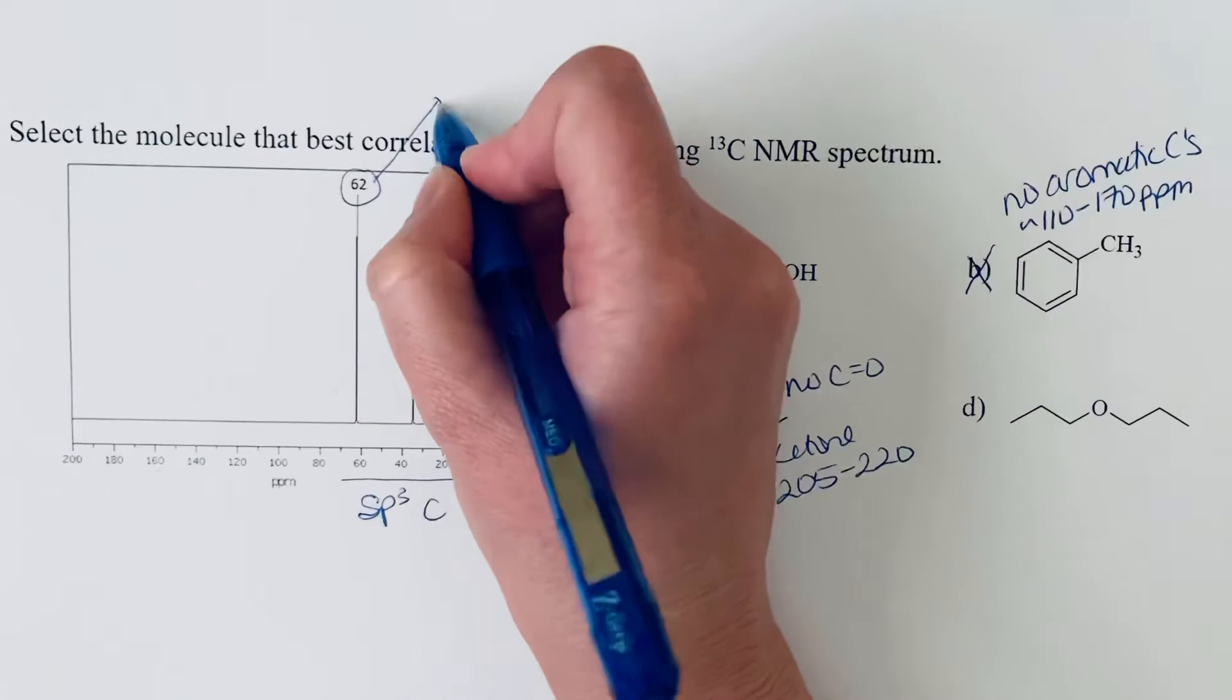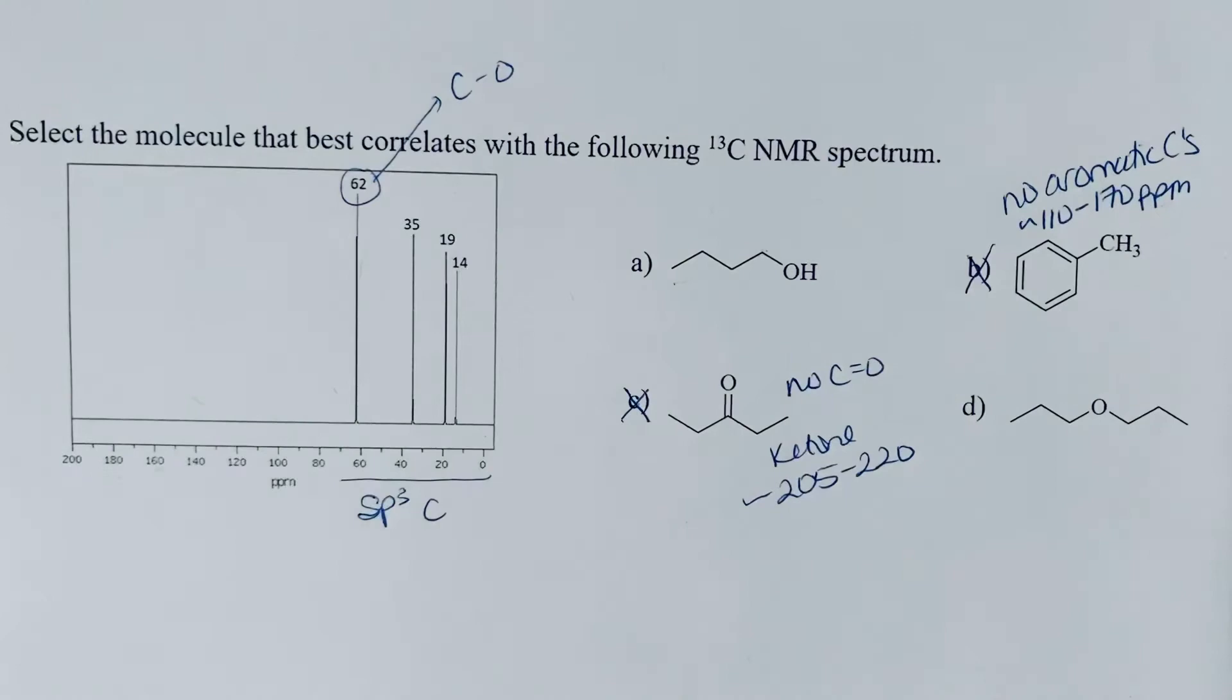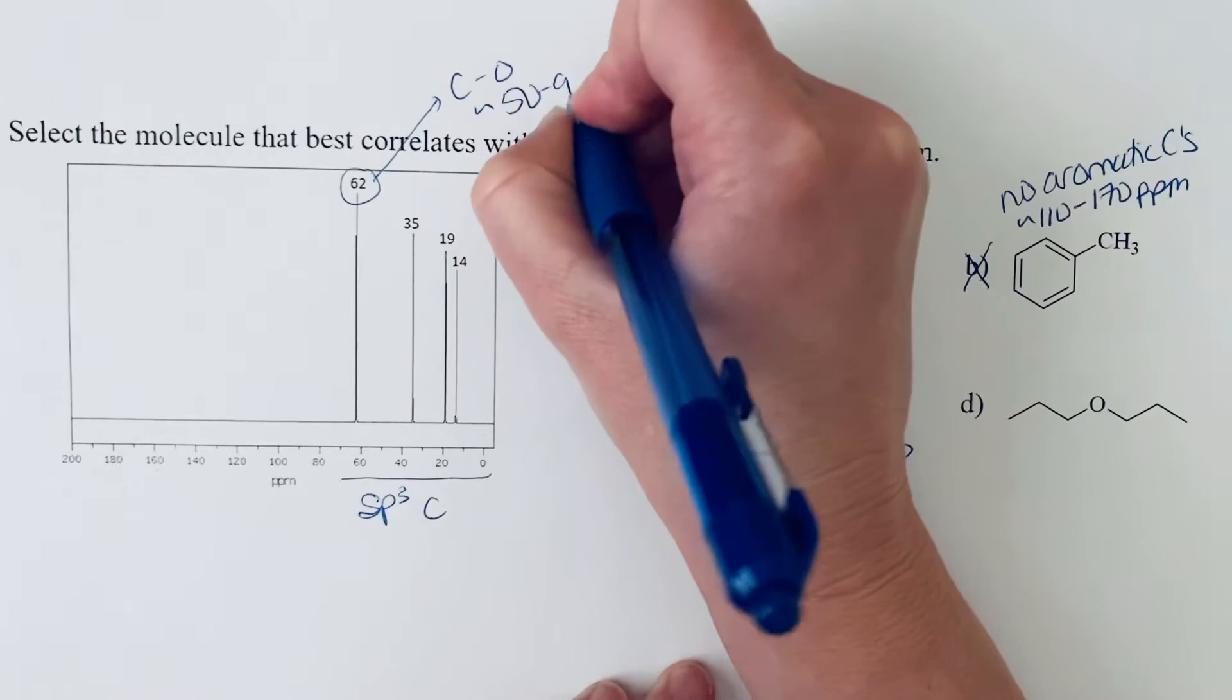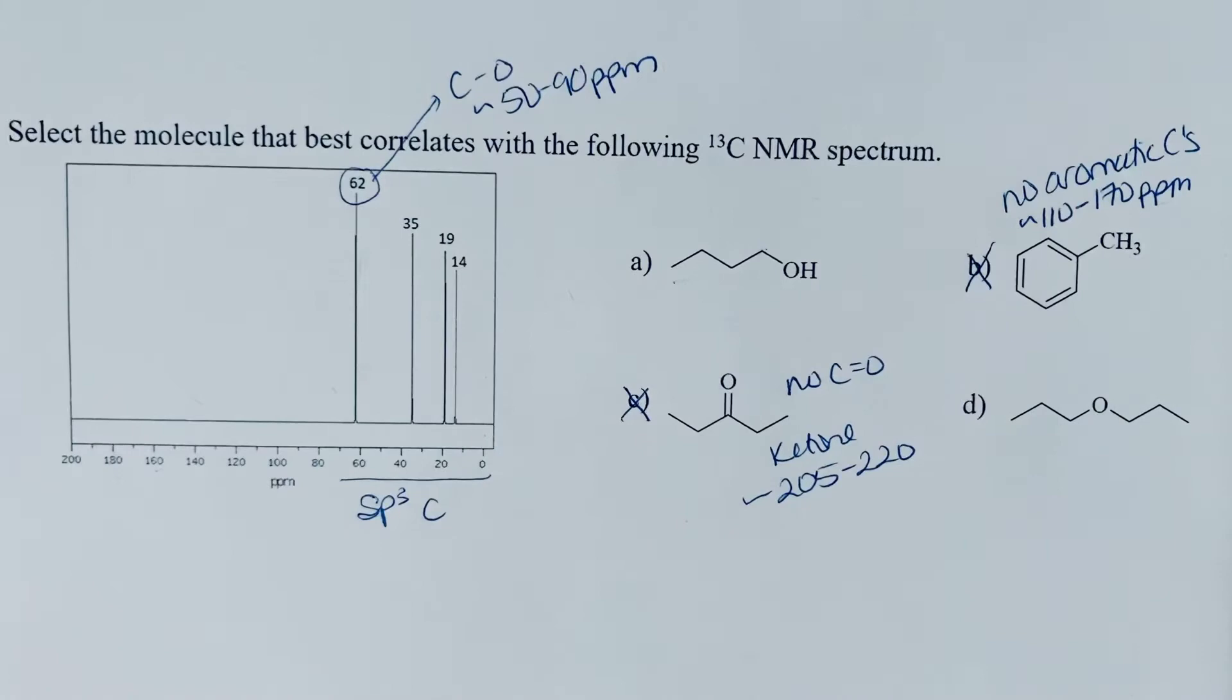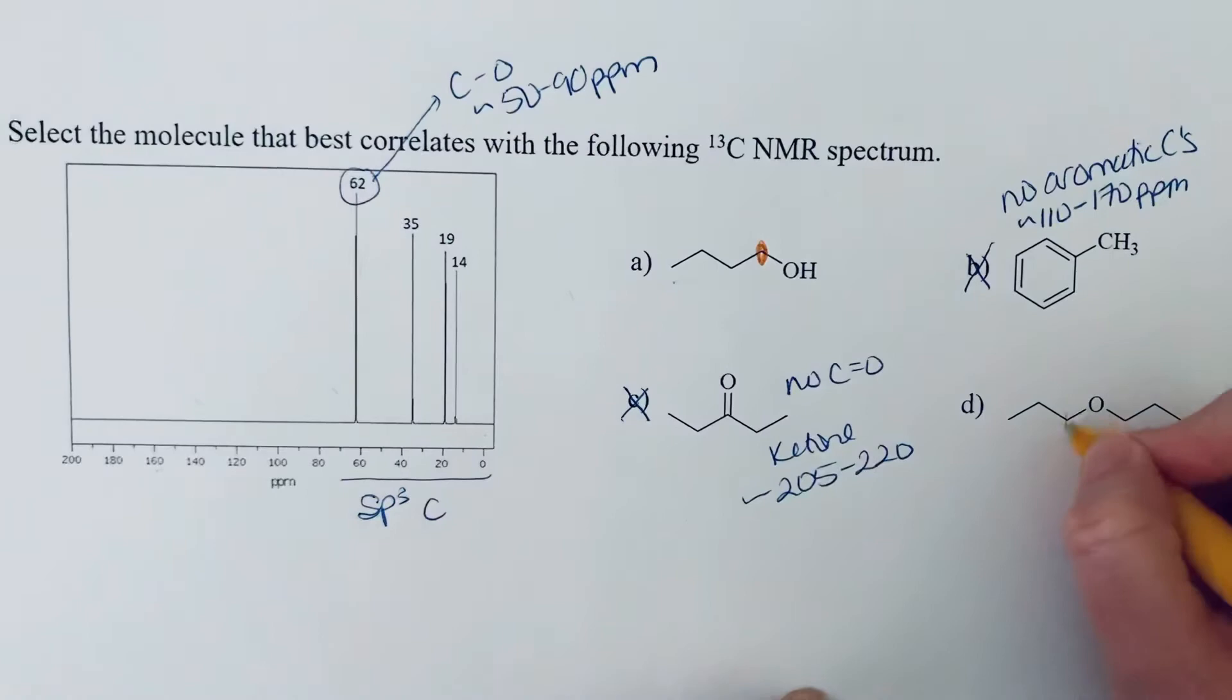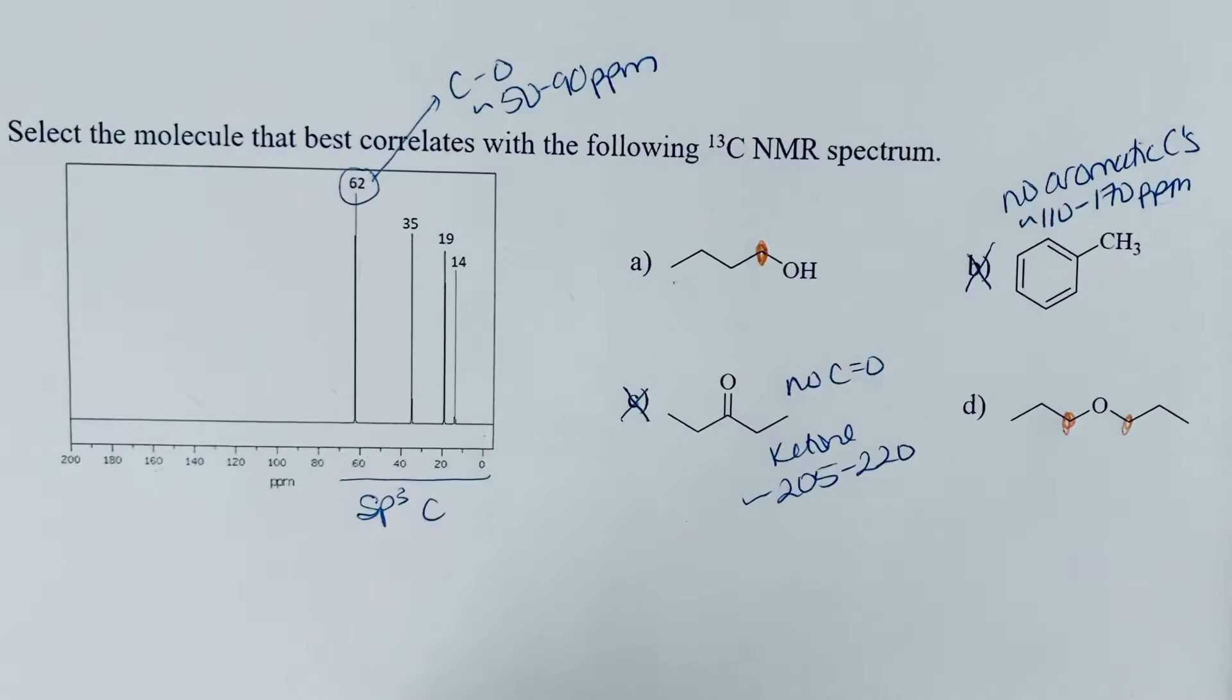This number at 62. So that's in the range of where you would expect to see a carbon that is attached to oxygen. So you would expect to see that somewhere between like 50 to 90 ppm. So that tells us we have a carbon attached to oxygen. Well, both A and D have that. So we have a carbon attached to oxygen here. And we have a carbon attached to oxygen on either side.